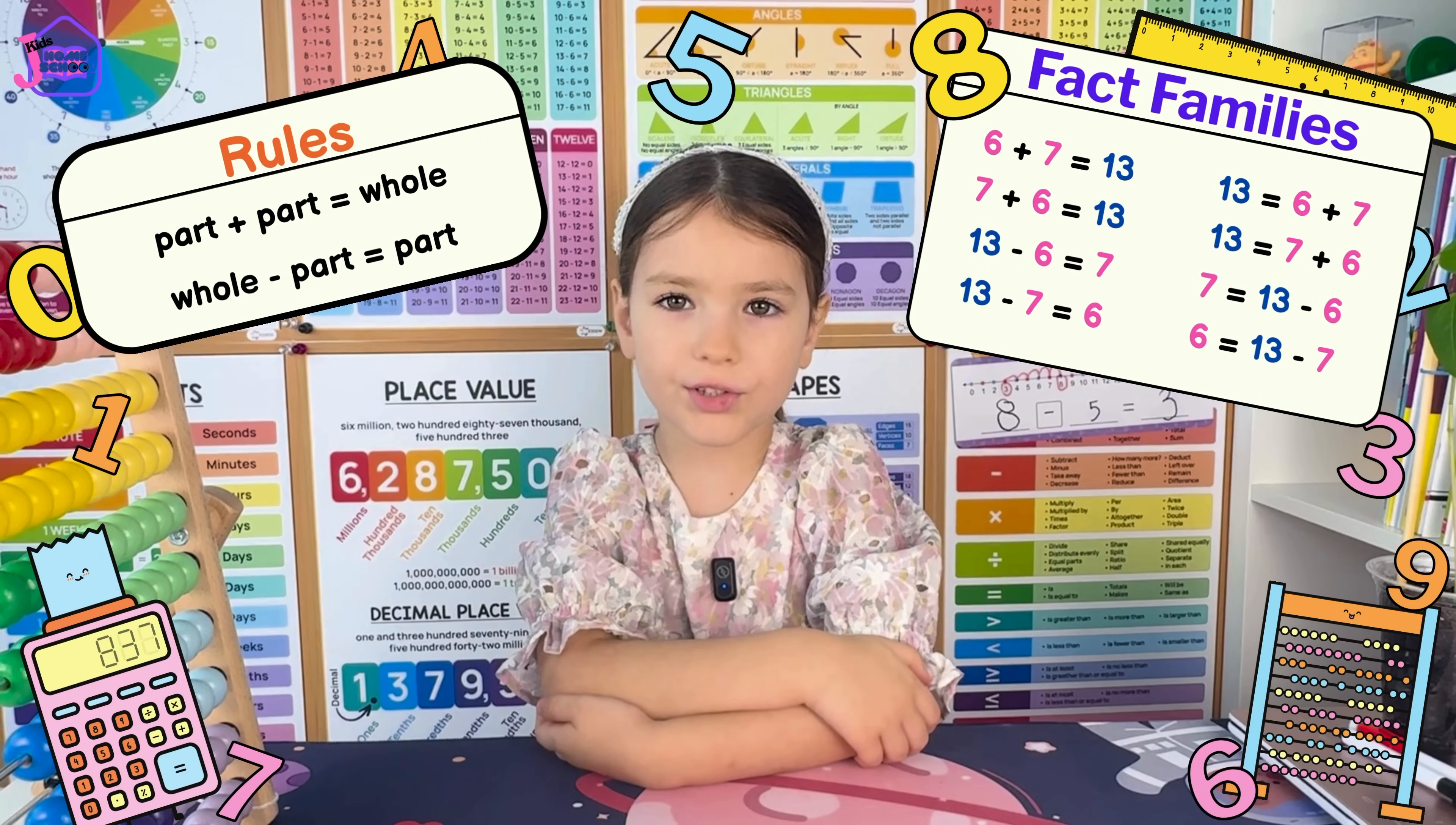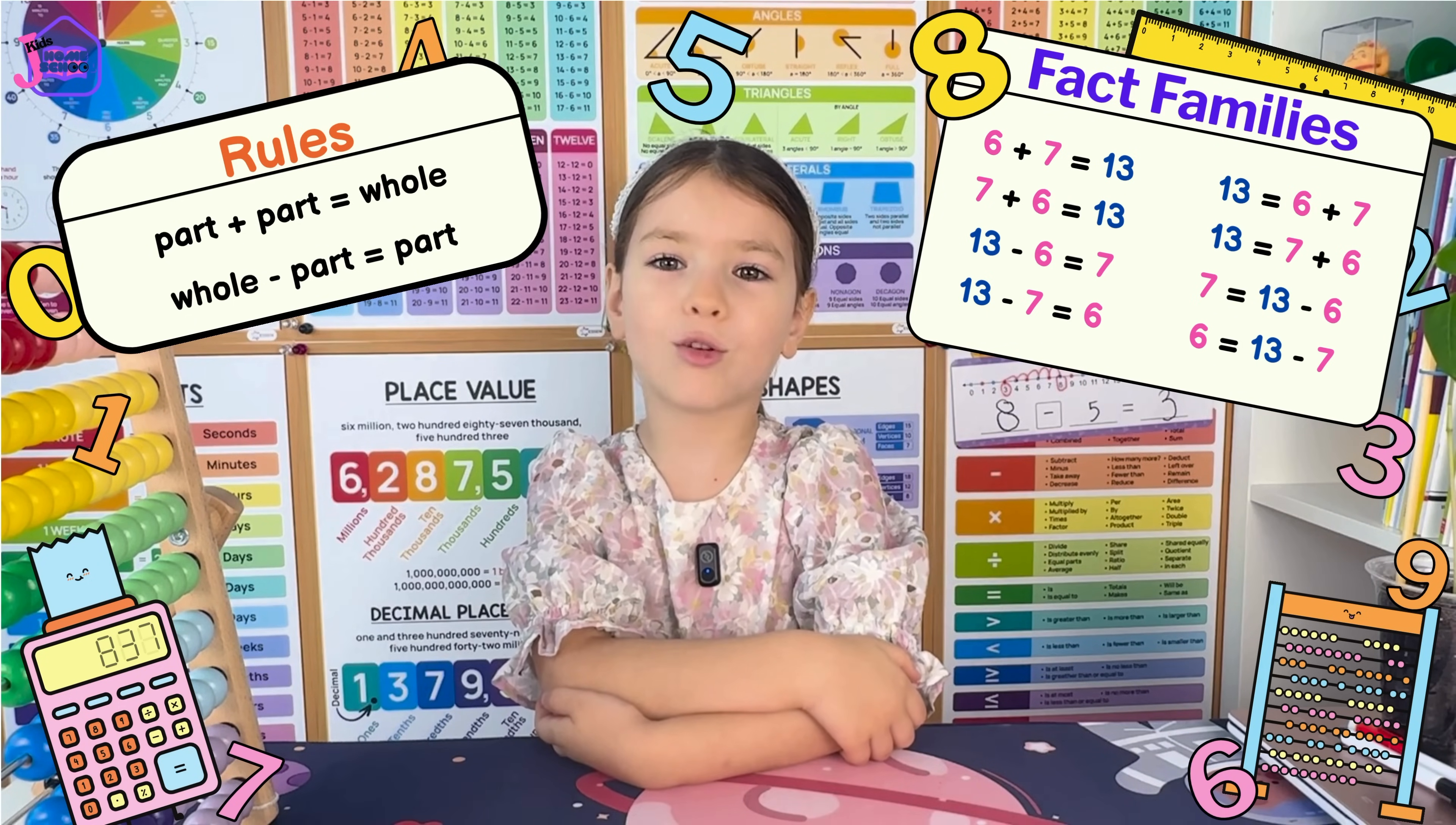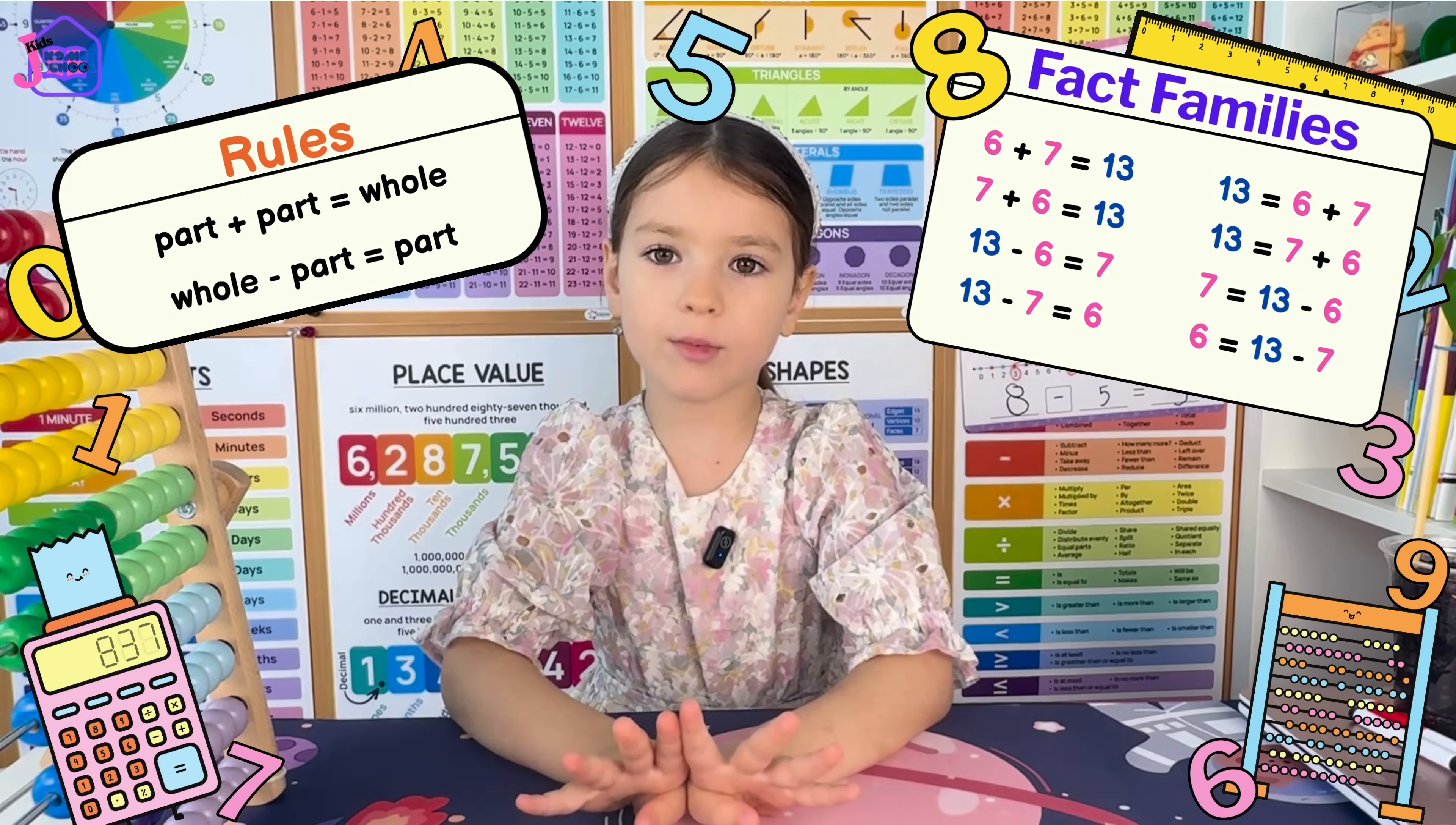Let's recap the rules. Part plus part equals whole. Whole take away part equals part. We can make up to eight number sentences using the same numbers.